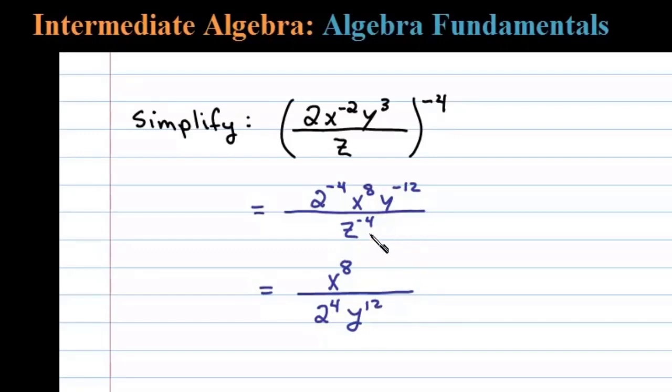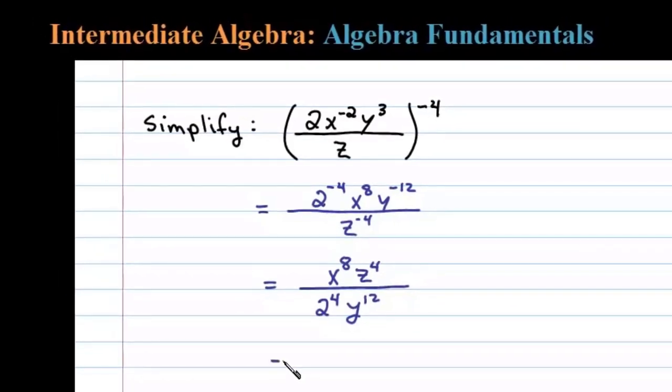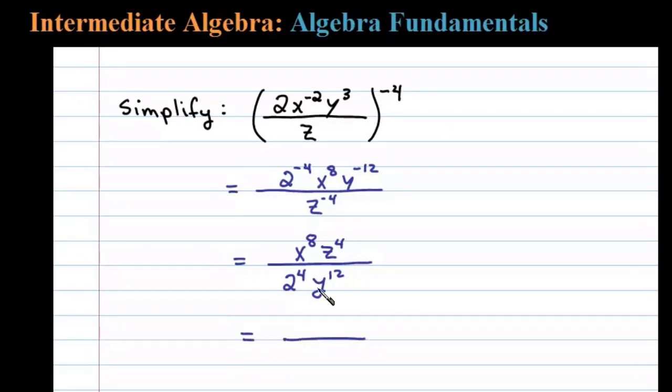And then finally, z to the negative 4th power can be written as z to the positive 4th power in the numerator. Now all that's left to do is clean things up. 2 to the 4th power is 16, so we'll write x to the 8th z to the 4th divided by 16 y to the 12th.